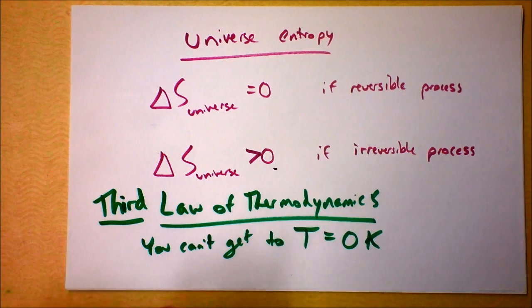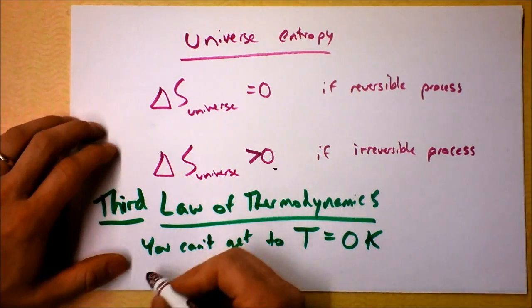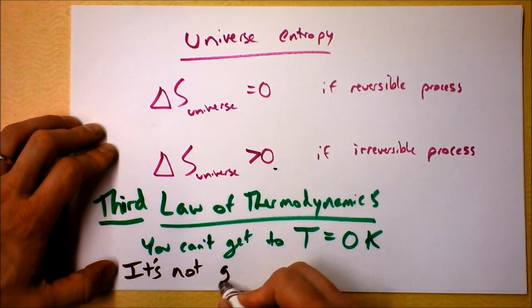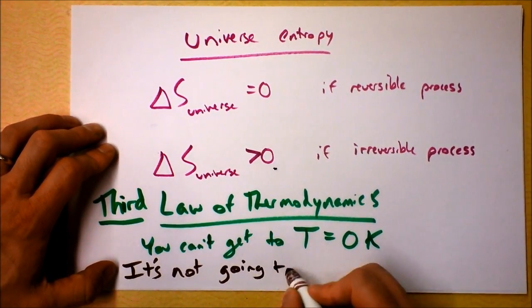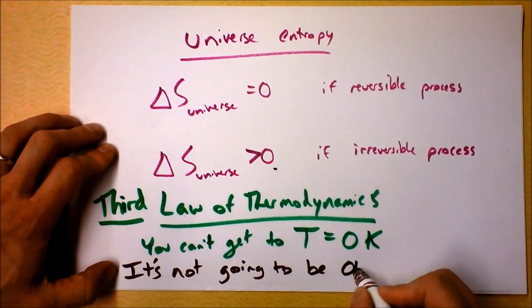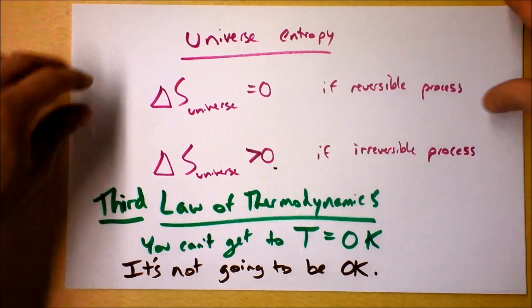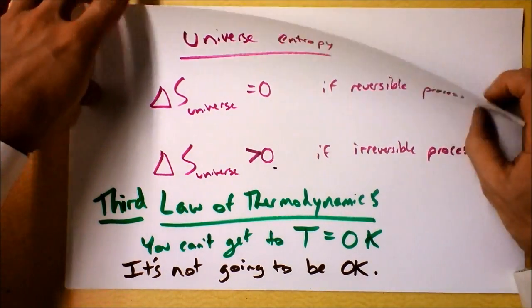You can't get to temperature equals zero Kelvin. I like to call it the third law of dynamics. It's not going to be okay. When somebody tells you everything's going to be okay, they're wrong. So the third law of thermodynamics says you can't get to zero Kelvin.